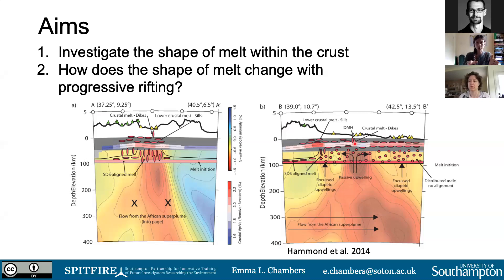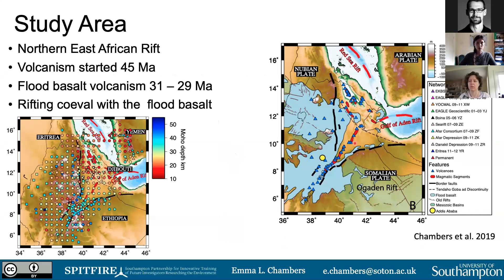What I wanted to do was generate one model that allowed comparison at all stages of the rift for all crustal depths. The region I'm looking at is the northern East African Rift, focusing on Ethiopia, Eritrea, Yemen, and Djibouti. In this region, volcanism started approximately 45 million years ago when the African superplume impinged on the base of the plate. The main flood basalt volcanism event occurred 31 to 29 million years ago, and its extent is outlined in blue.